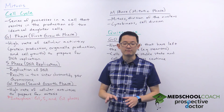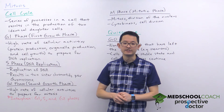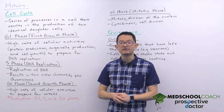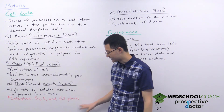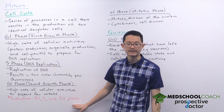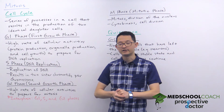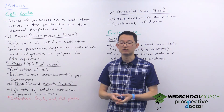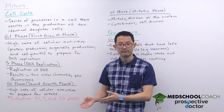Sometimes on the MCAT you might encounter another term called interphase. This is generally referred to as the period of time when a cell is preparing for mitosis, and it is defined as the G1, S, and G2 phases combined. So another way to think about it is that the cell cycle is really just alternating between interphase and the M phase.